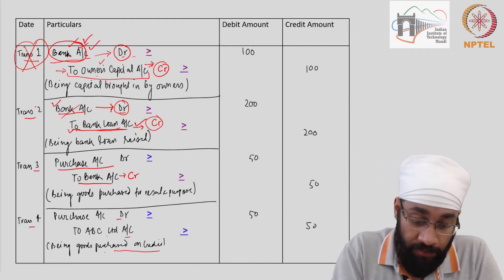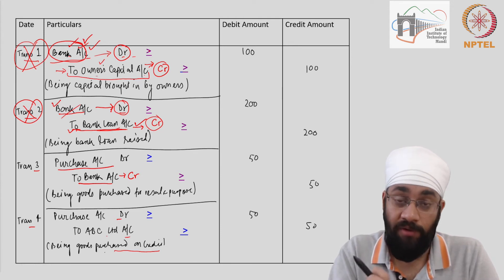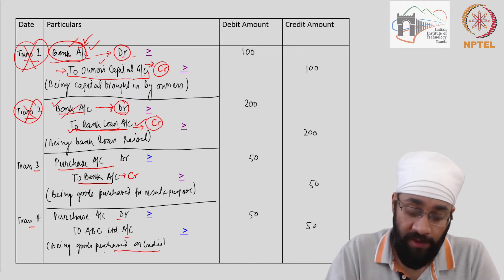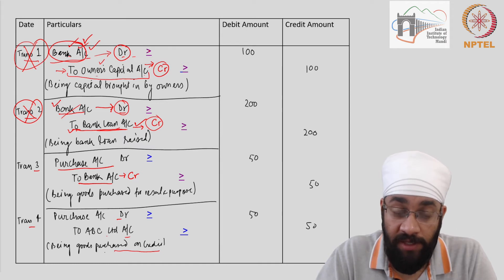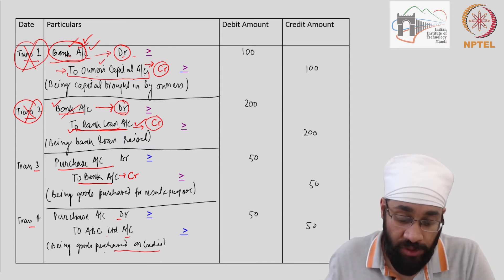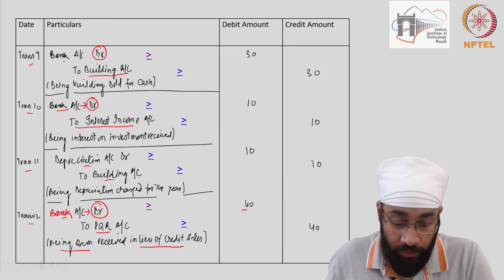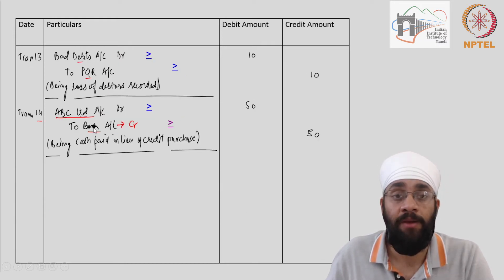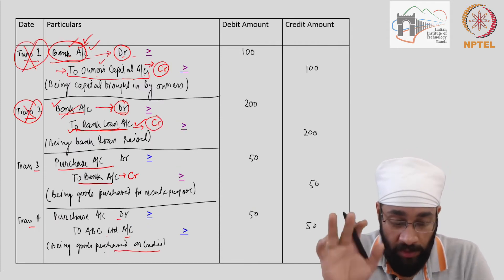Transaction two is done. I'm crossing it off so I don't get confused later. Looking at the rest of the transactions to see if any involve bank loan account — transactions 5 through 8, no; 9 through 12, no. There is no other transaction involving bank loan account, so bank loan account has also been taken care of.